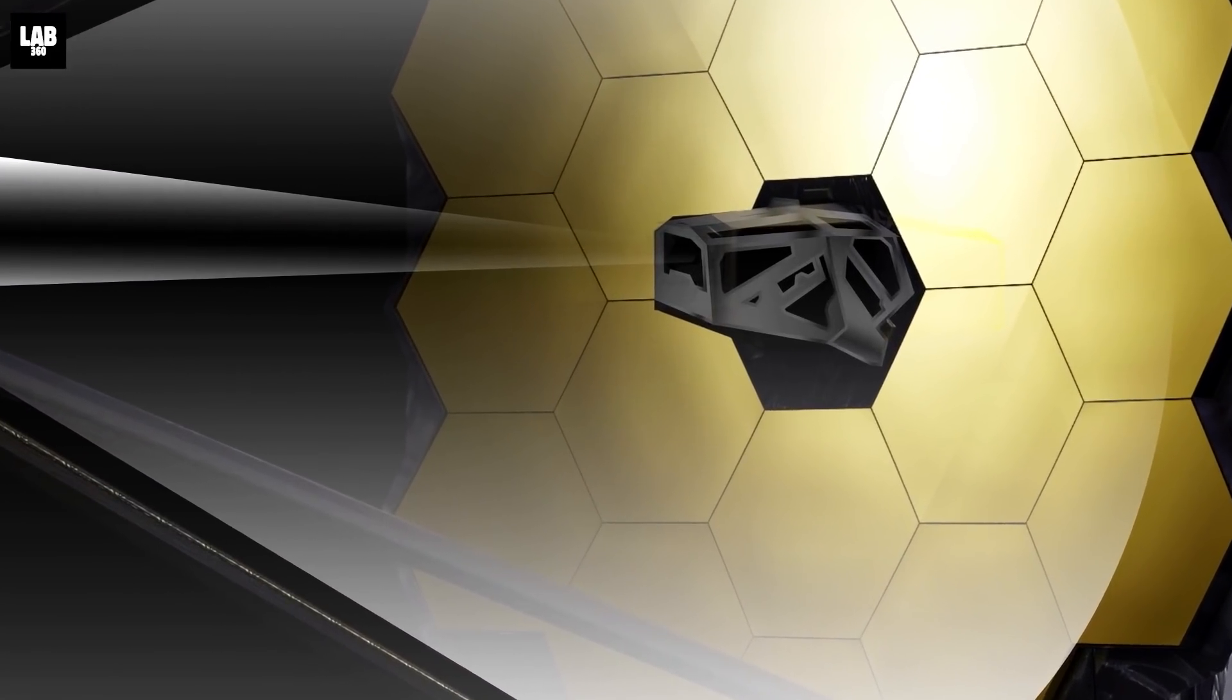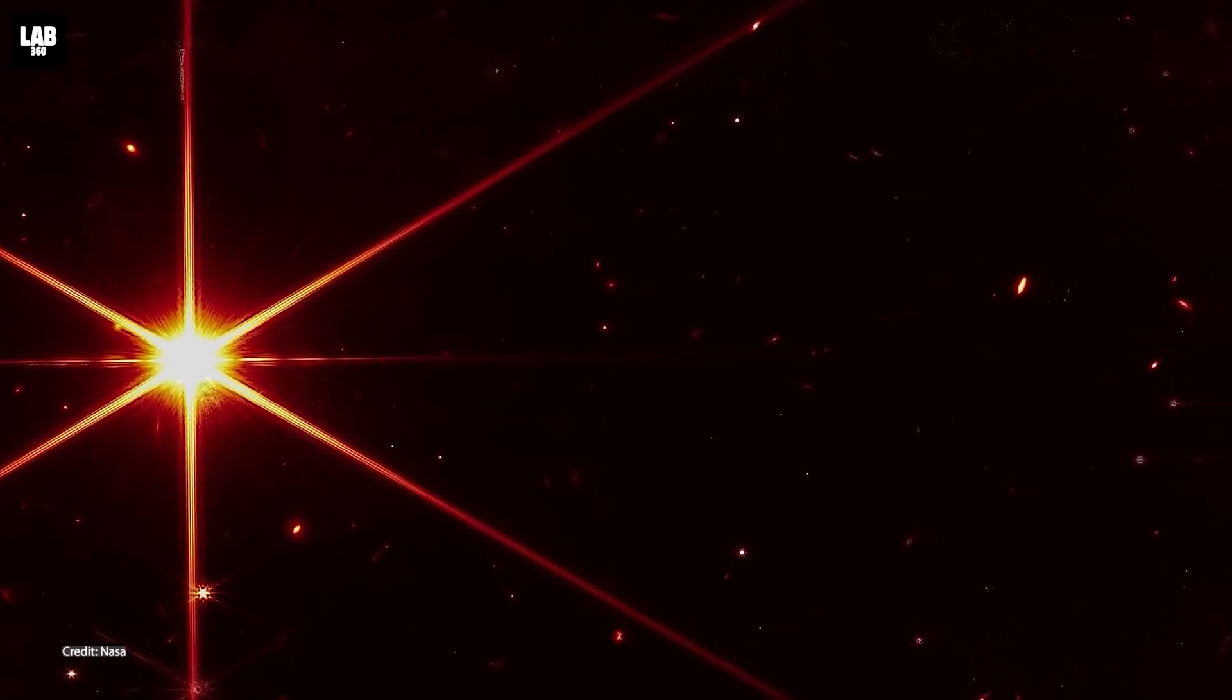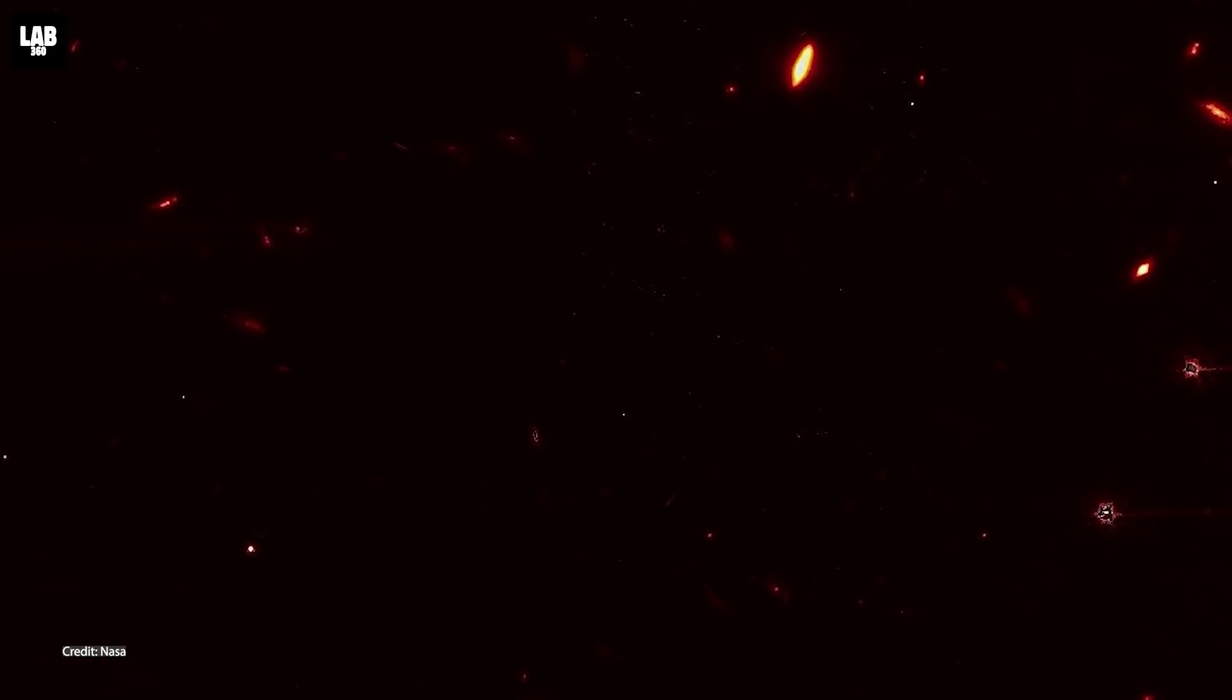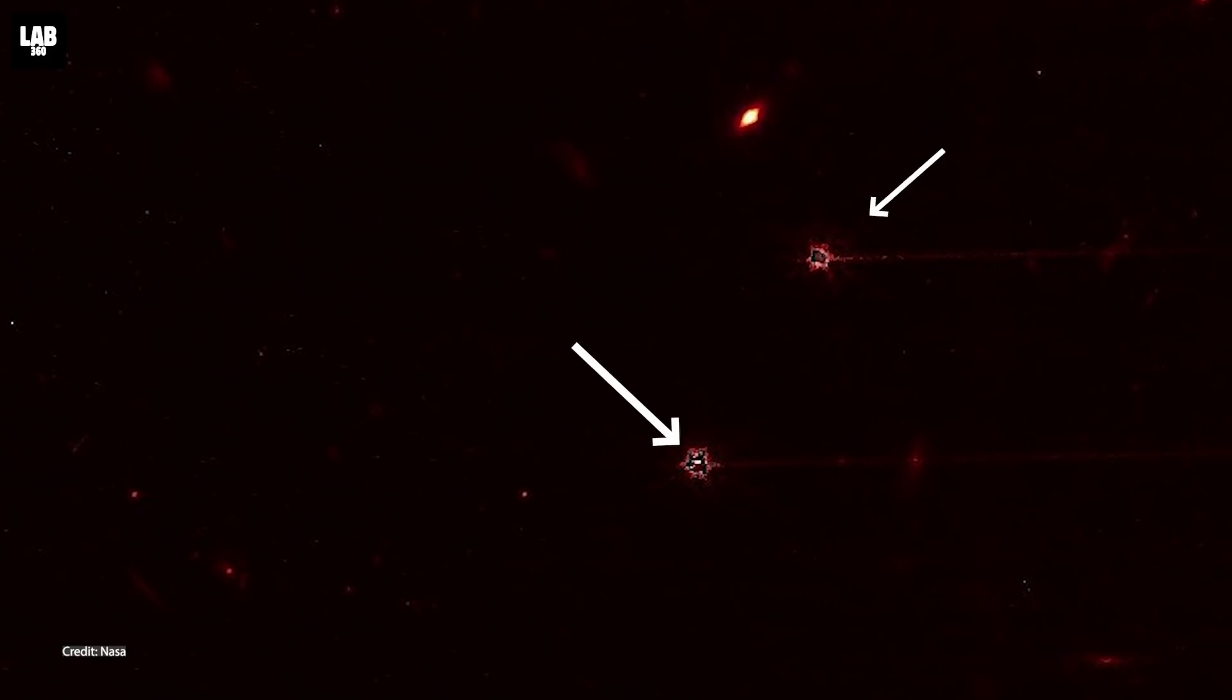What if we told you that apart from the star and the multiple galaxies captured by the Webb telescope, there was something else in that image that everyone missed? The JWST accidentally captured a moving black hole.